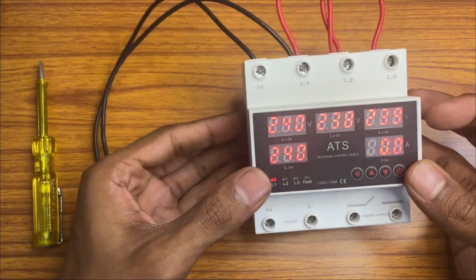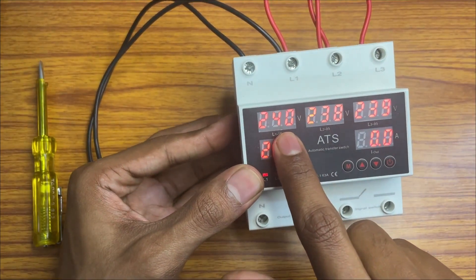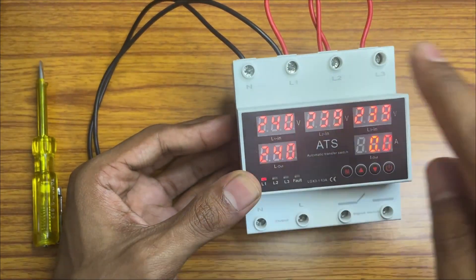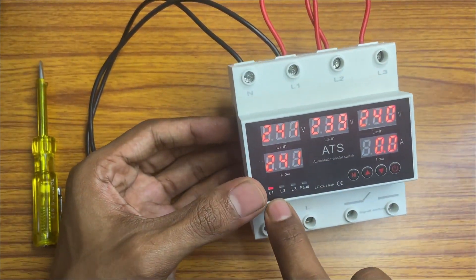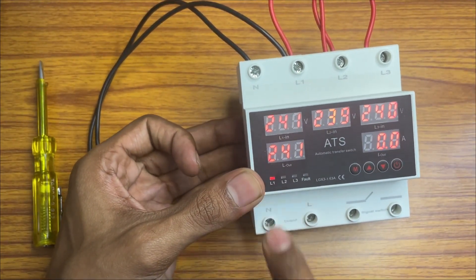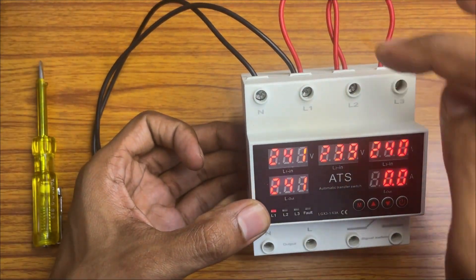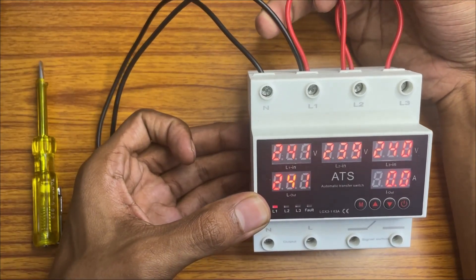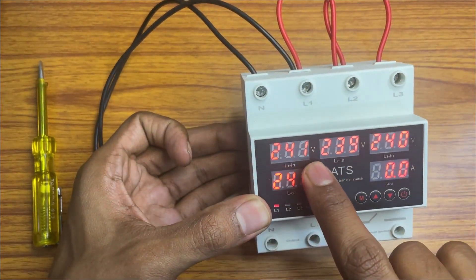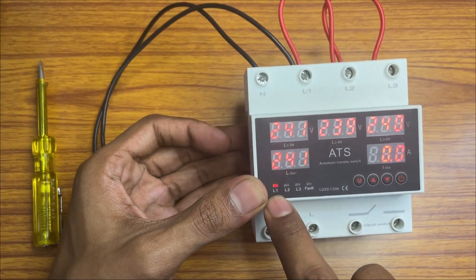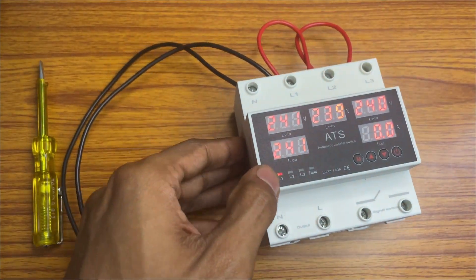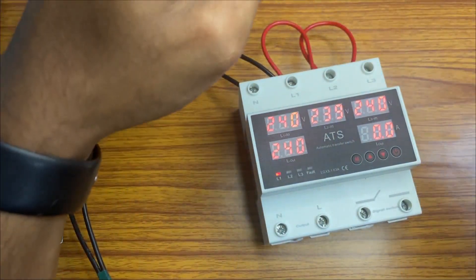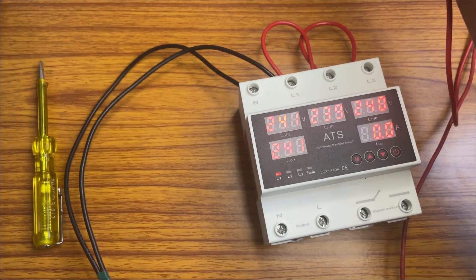See now it is 240 volt, 240 volt, and 239. It is showing L1 line is giving the output. L1 line means this is the line L1, right? 240 volt, 241 volt is there, so it is giving the output from L1. It is showing which line is giving the output. So let's give a bulb and I will show you.